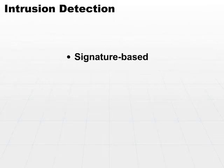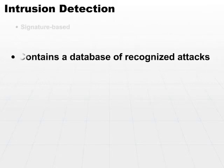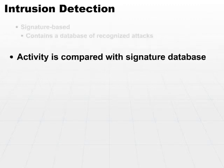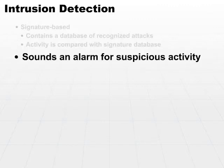There are a couple different ways to do that. We can look at signature-based activity. A signature-based IDS looks at a database of recognized attacks. What it does is take current activity and compare it with the signature. So if it sees a high number of packets of a certain type with a certain bit set and it matches a signature of a known attack, it will sound an alarm.